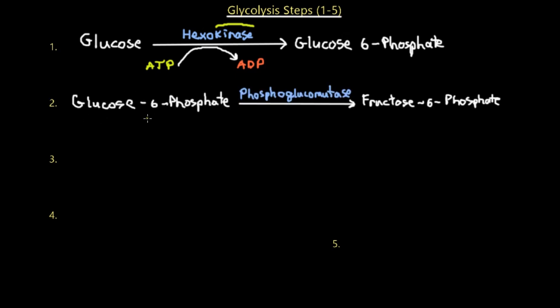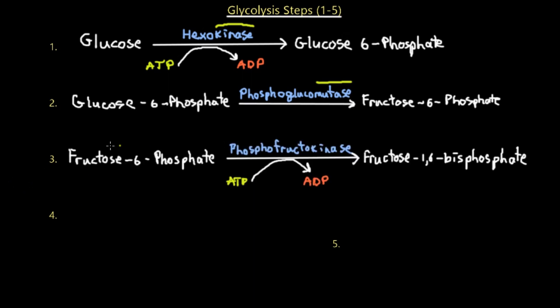Step two: glucose 6-phosphate is isomerized into fructose 6-phosphate. Fructose is an isomer of glucose, so this is an isomerization reaction catalyzed by the enzyme phosphoglucose isomerase. The key enzyme type here is the mutase, which typically catalyzes isomerization reactions.